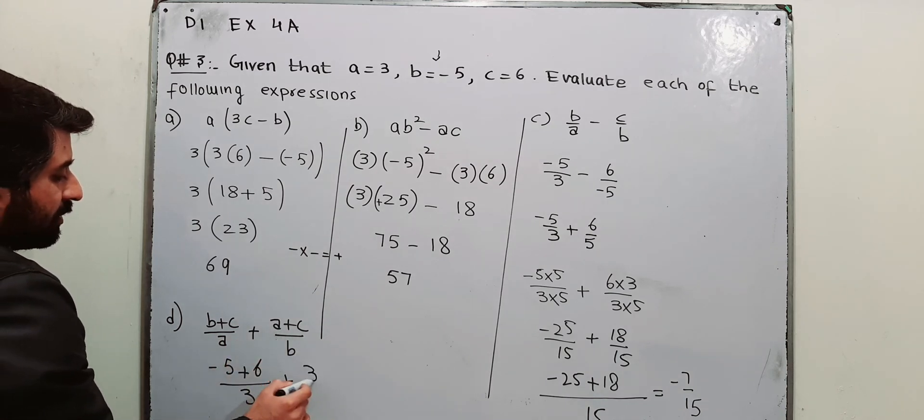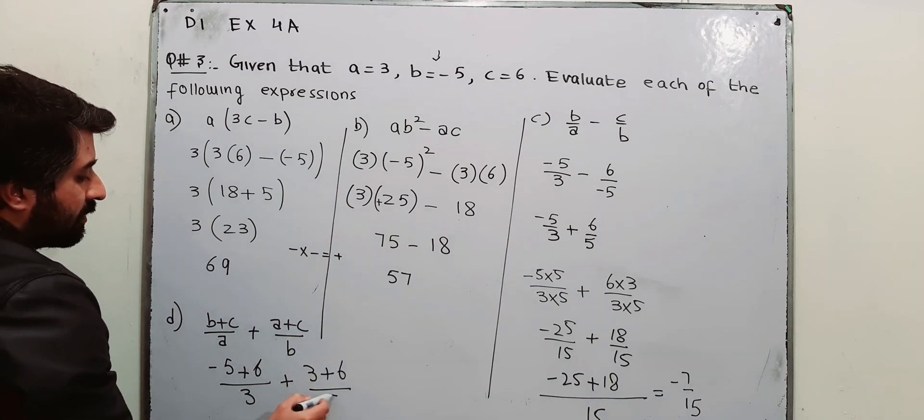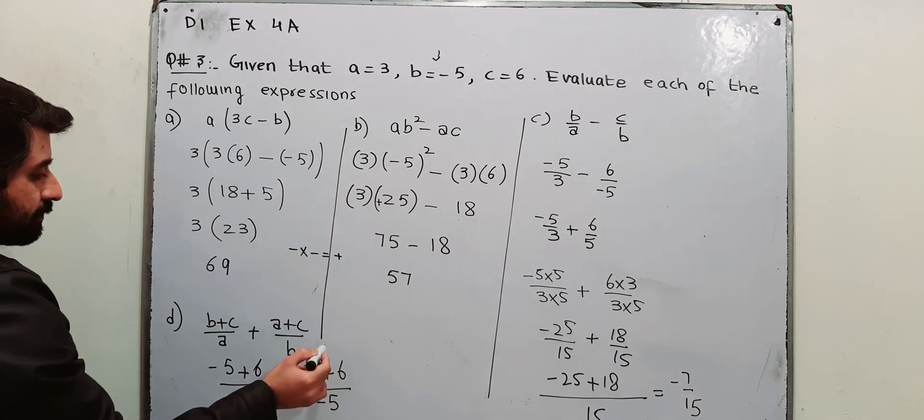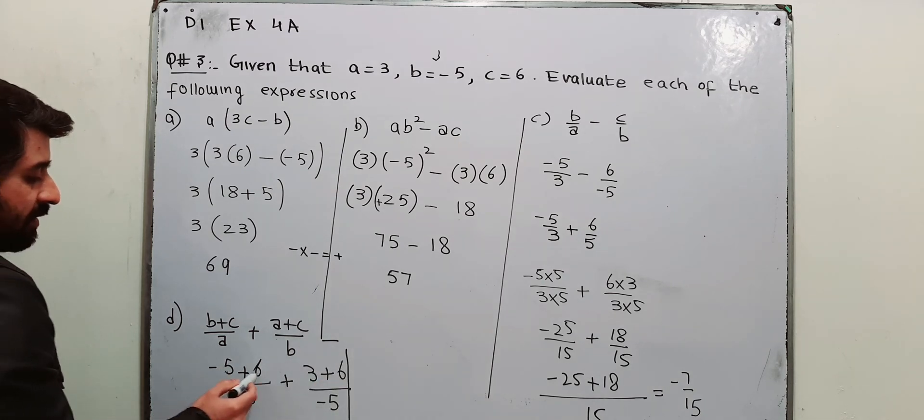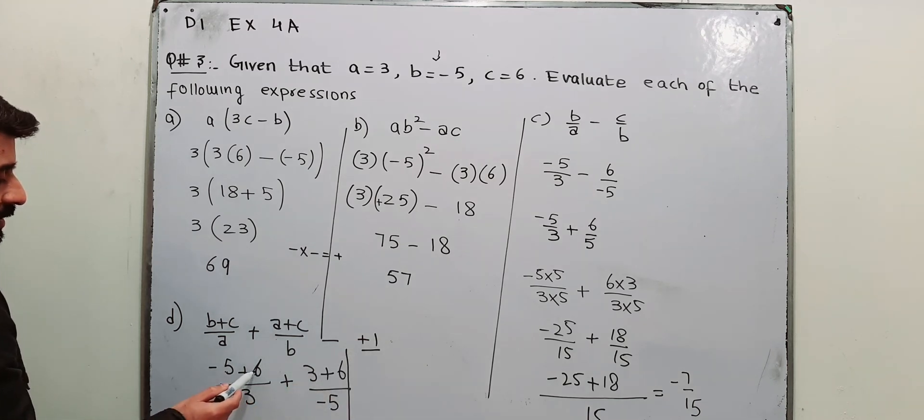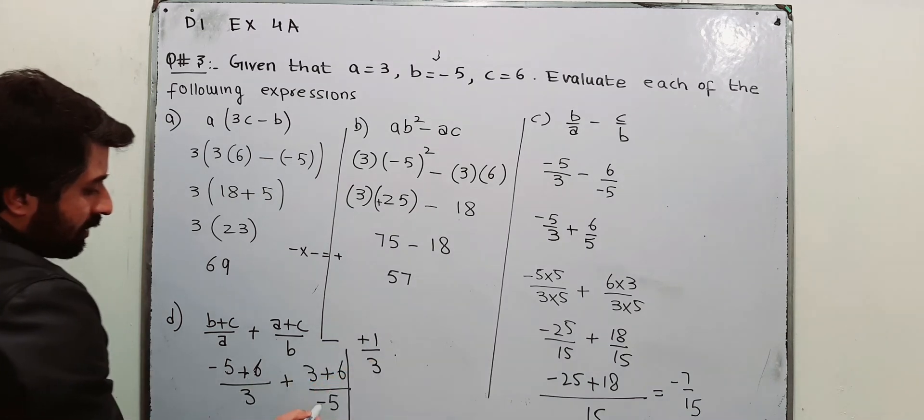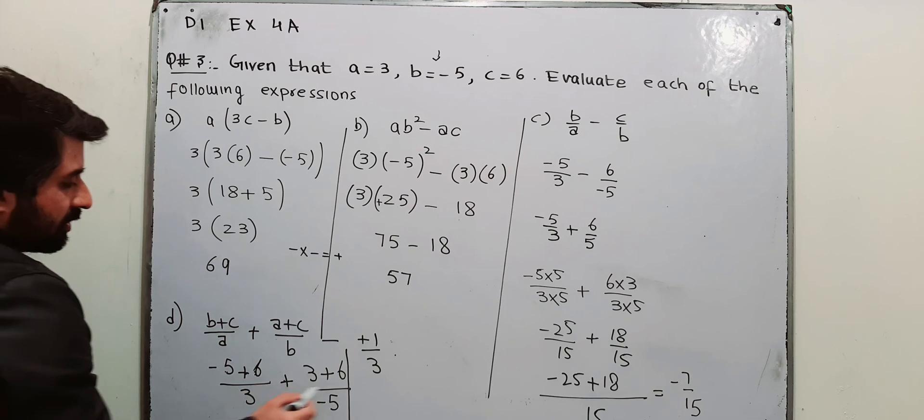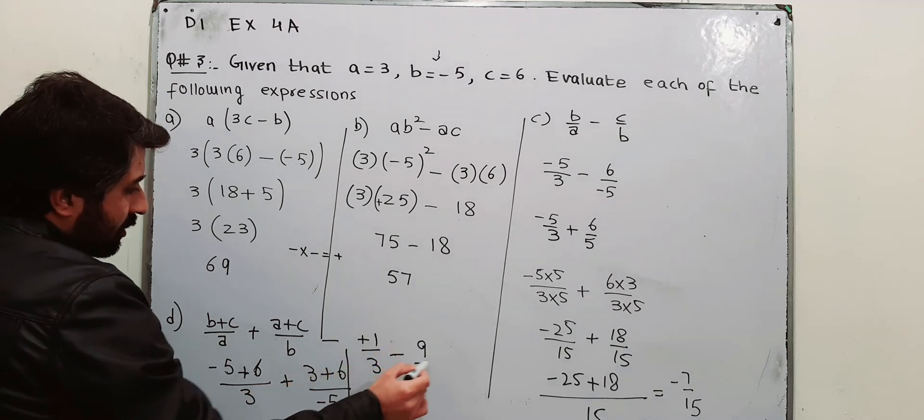Again, A is 3, C is 6, B is minus 5. Minus 5 plus 6 is plus 1. The sign of the larger number is plus. Minus 5 plus 6 is plus 1 over 3. Negative into positive is negative. 6 plus 3 is 9 over 5.